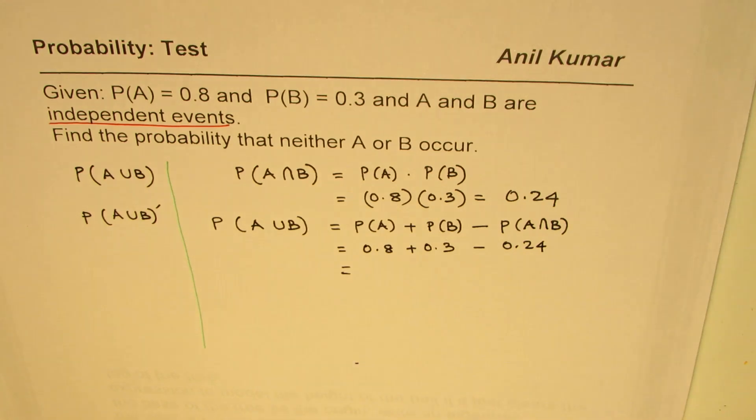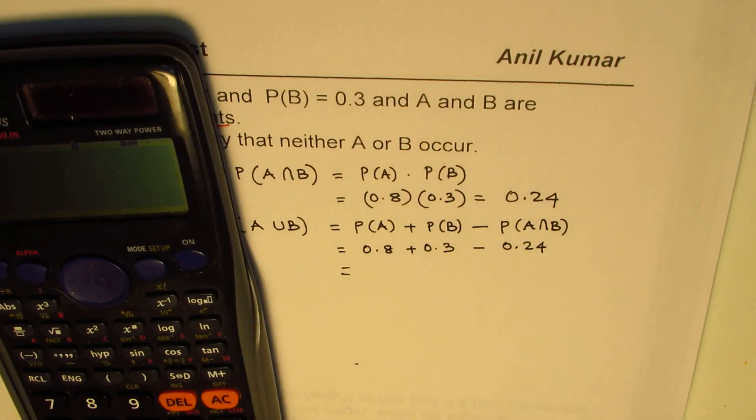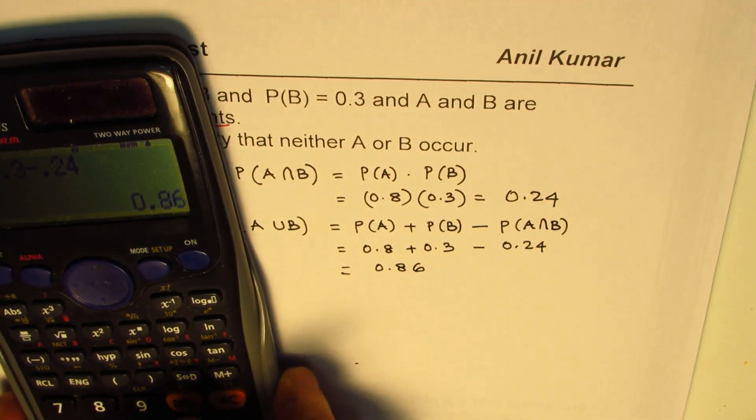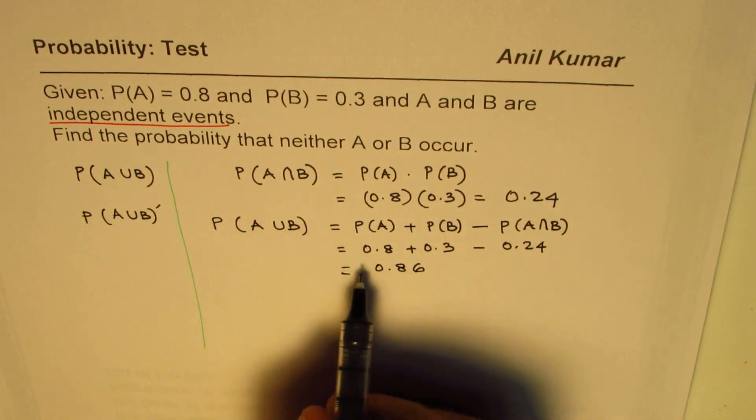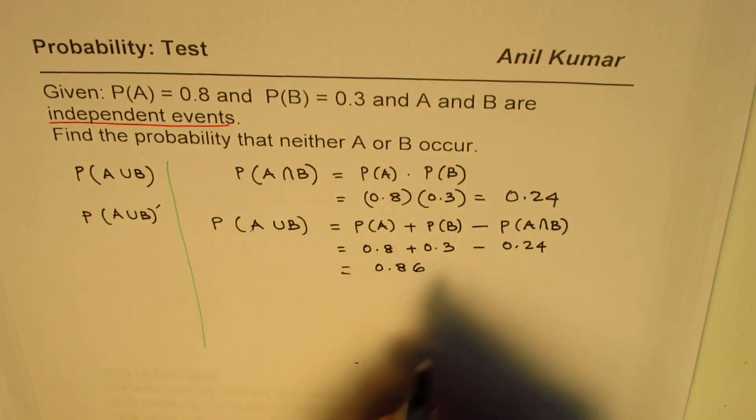If you take this away, let us calculate this answer: 0.8 plus 0.3 take away 0.24 gives us in decimals 0.86. So 0.86 is probability of either A to occur or B to occur.